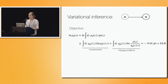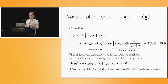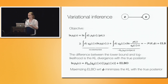The key thing to notice is that the difference between the evidence lower bound and the marginal log likelihood is the KL divergence between the approximate posterior and the true posterior of your generative model. So if we maximize the evidence lower bound with respect to the parameters of our approximate posterior, what we're actually doing is minimizing the KL divergence between the approximate posterior and the true posterior.